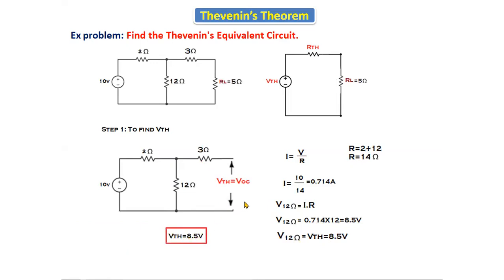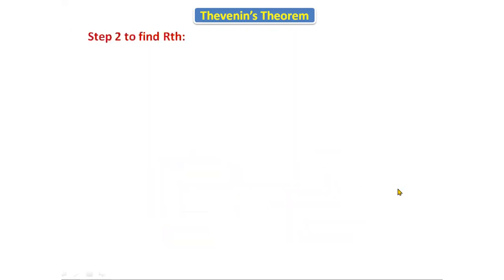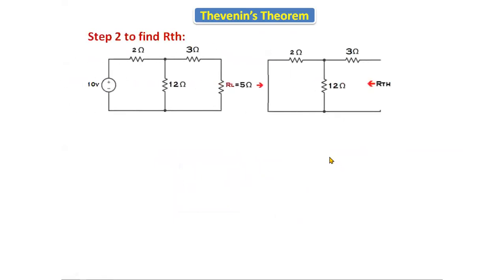The voltage at the open circuit terminal is 8.5 volts, so VTH = 8.5 volts. This is the procedure to find Thevenin's voltage. Now we will see how to find RTH.